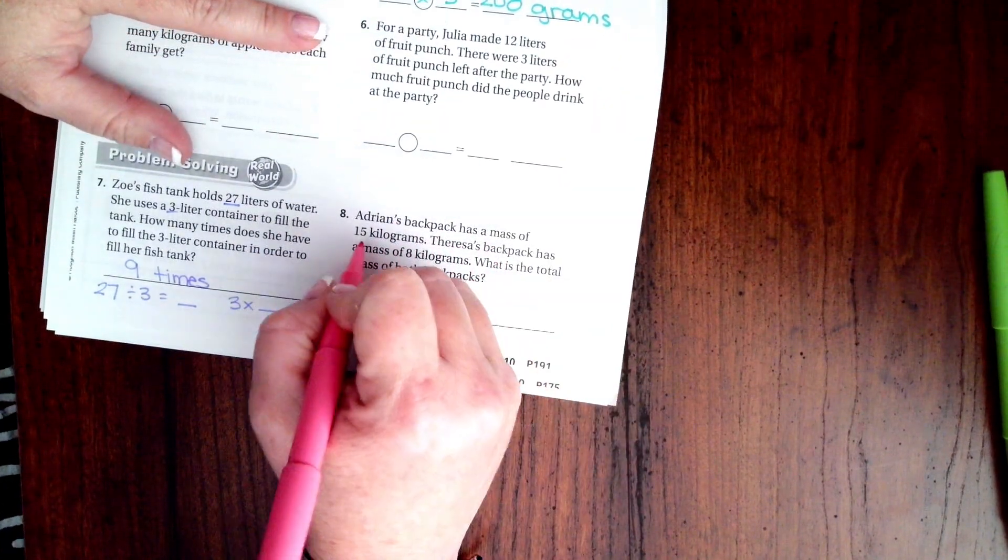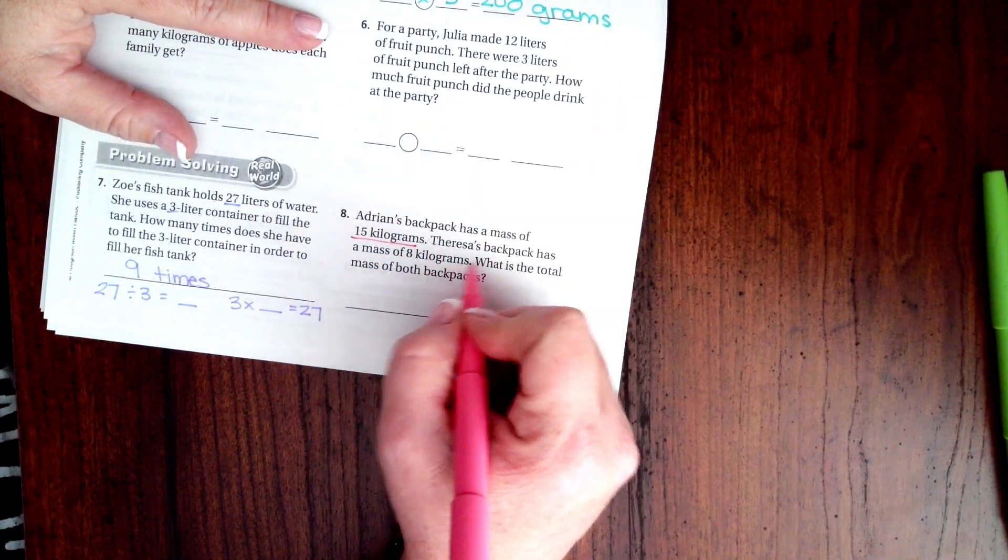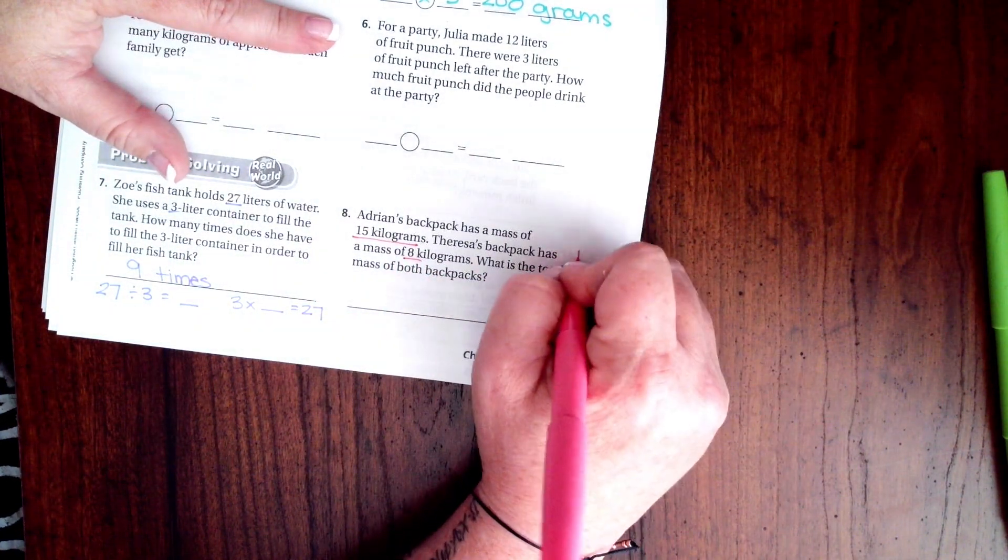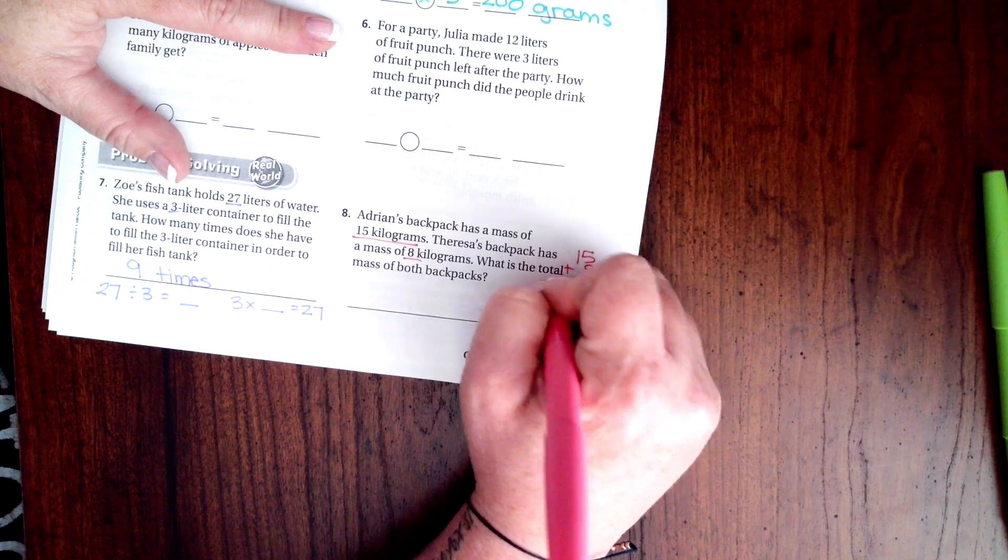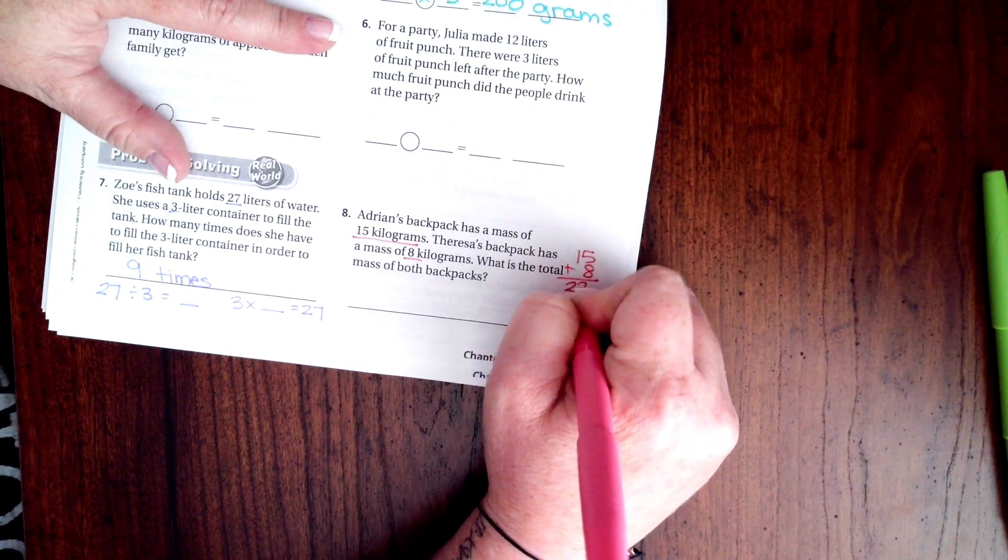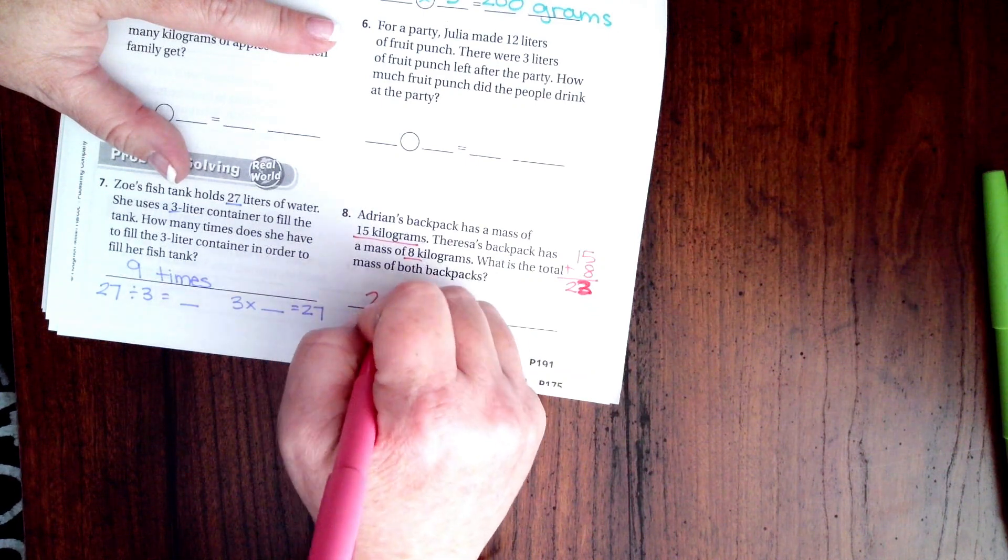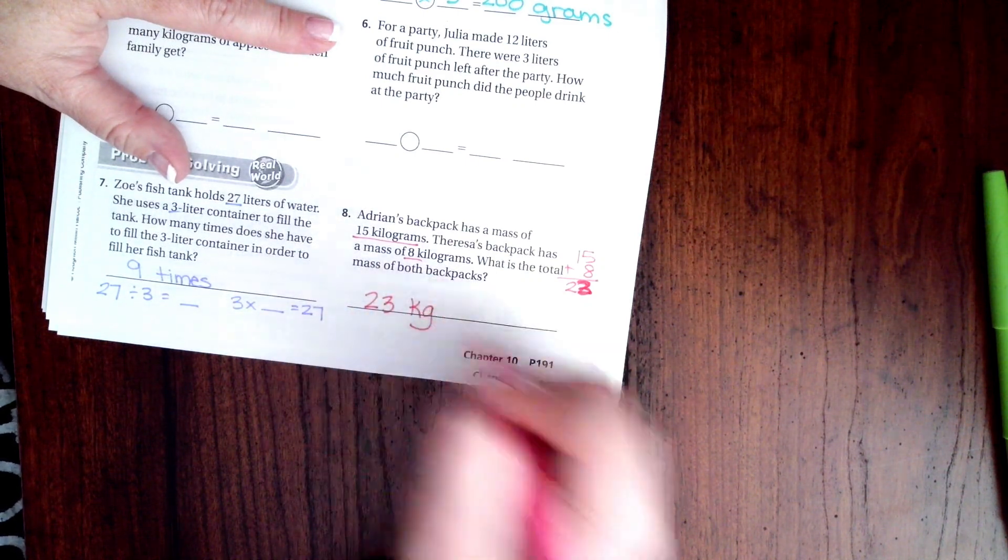Adrian's backpack has a mass of 15 kilograms. Teresa's backpack has a mass of 8 kilograms. What is the total mass of both backpacks? We're going to do 15 plus 8, which gives us 23 kg.